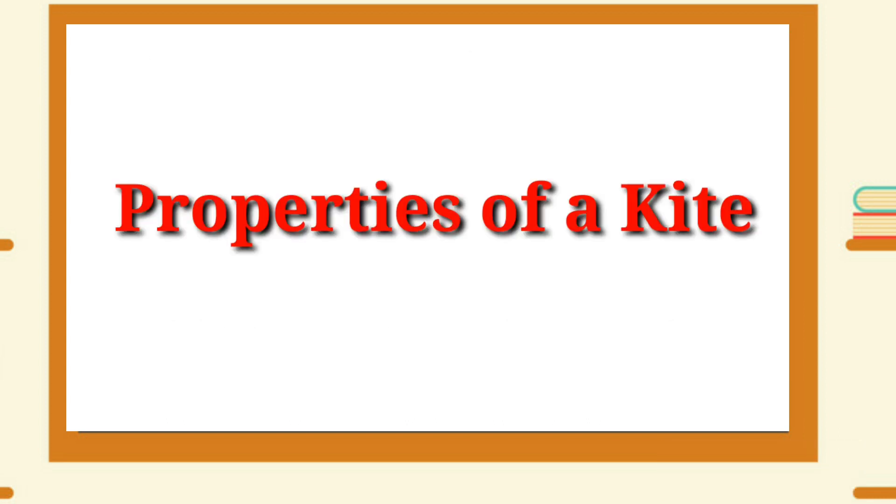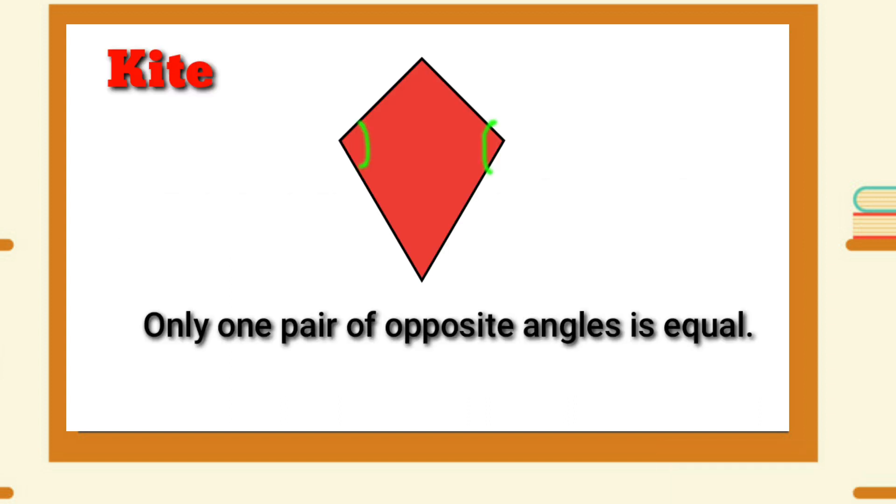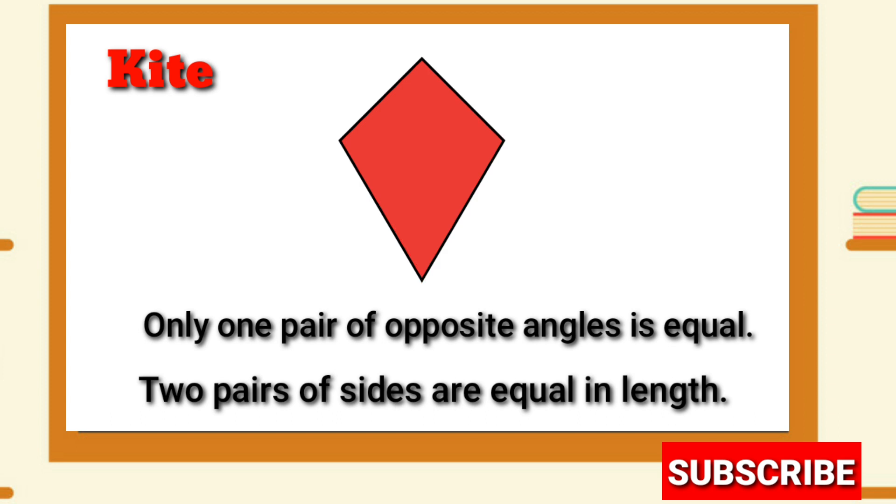Properties of a Kite: Only one pair of opposite angles is equal, and two pairs of sides are equal in length.